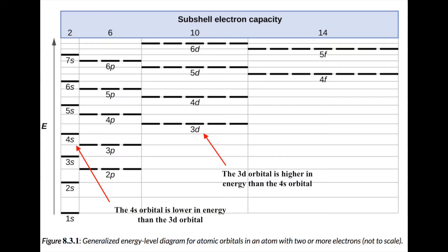Hello everyone, and welcome back to Chemist Tea Time. While we learned last lesson how to write electron configurations, I only explained how to write out the first three periods. This is because when you start introducing certain orbitals, such as the d orbitals, these become a little bit more difficult to write due to the fact that they actually lie higher in energy than the next s orbital.